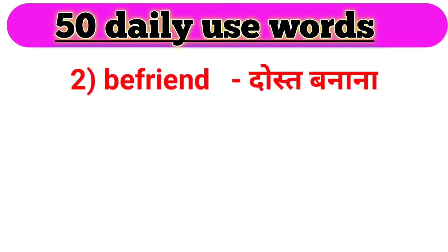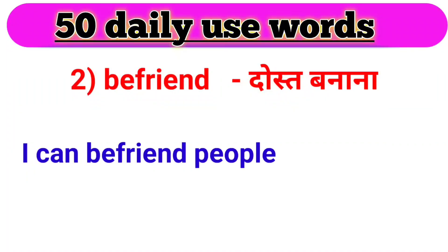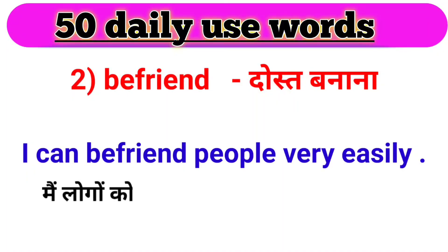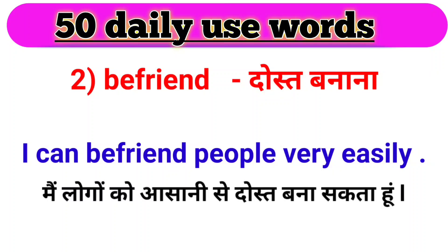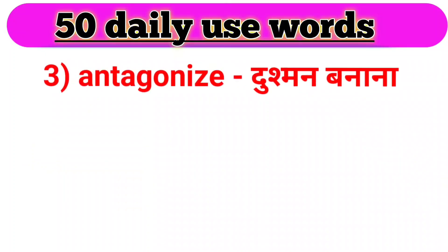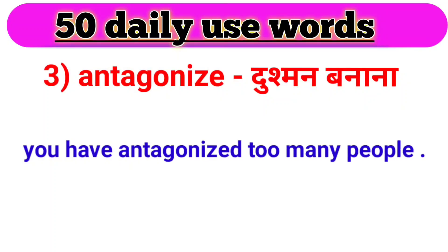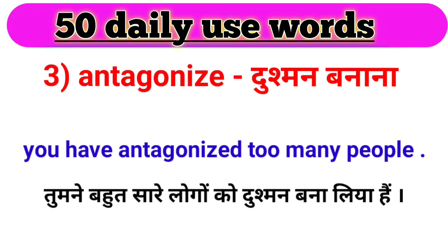Next word, we have befriend. Befriend ka matlab hota hai dost banana. For example: I can befriend people very easily. Next word, we have antagonize. Antagonize ka matlab hota hai dushman banana. For example: You have antagonized too many people. Tumne bahut saare logo ko dushman bana liya hai.